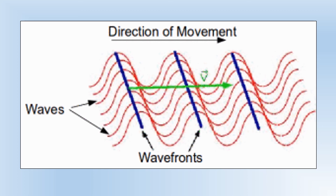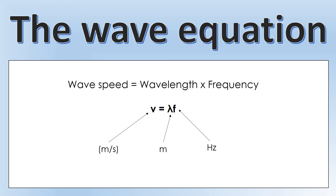We'll now look at how these wave properties relate to one another. Three are related by the wave equation, discovered through experiment: wave speed equals wavelength times frequency. Wave speed is measured in meters per second, wavelength in meters, and frequency in hertz — the number of waves per second, named after the scientist Hertz who made major contributions to the field. The symbols used are: lambda (λ) for wavelength, f for frequency, and v for speed.